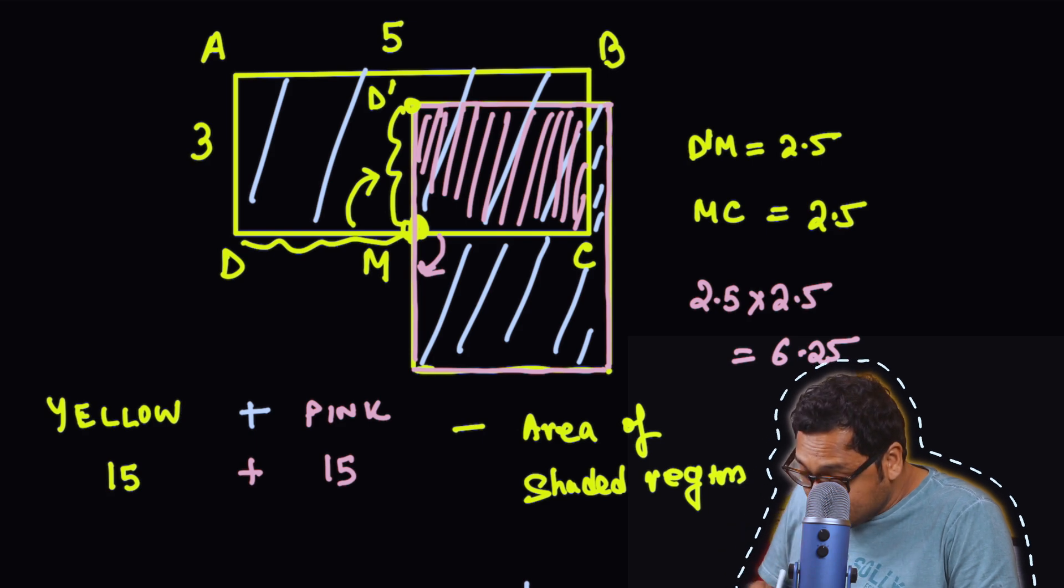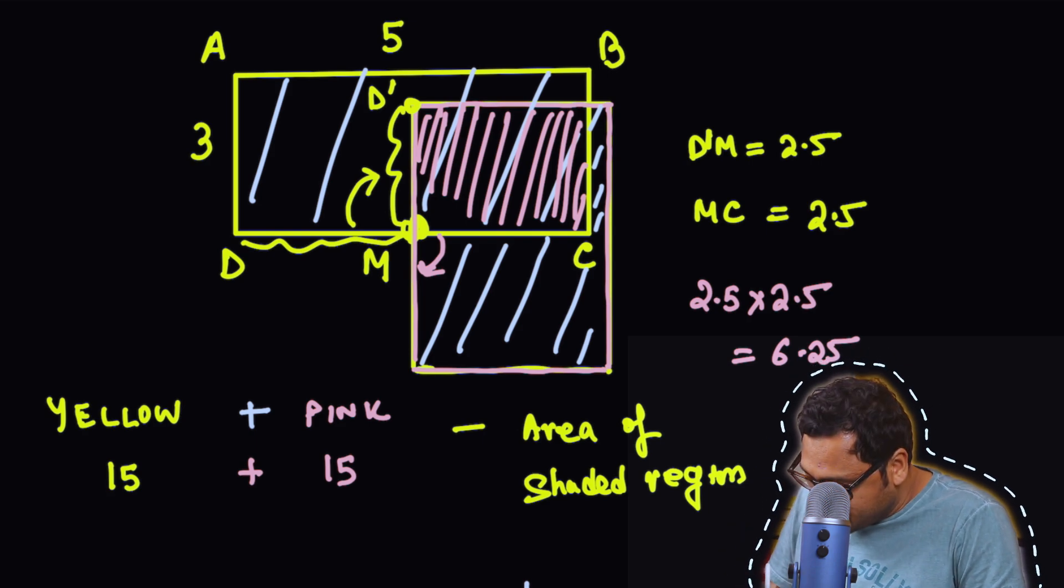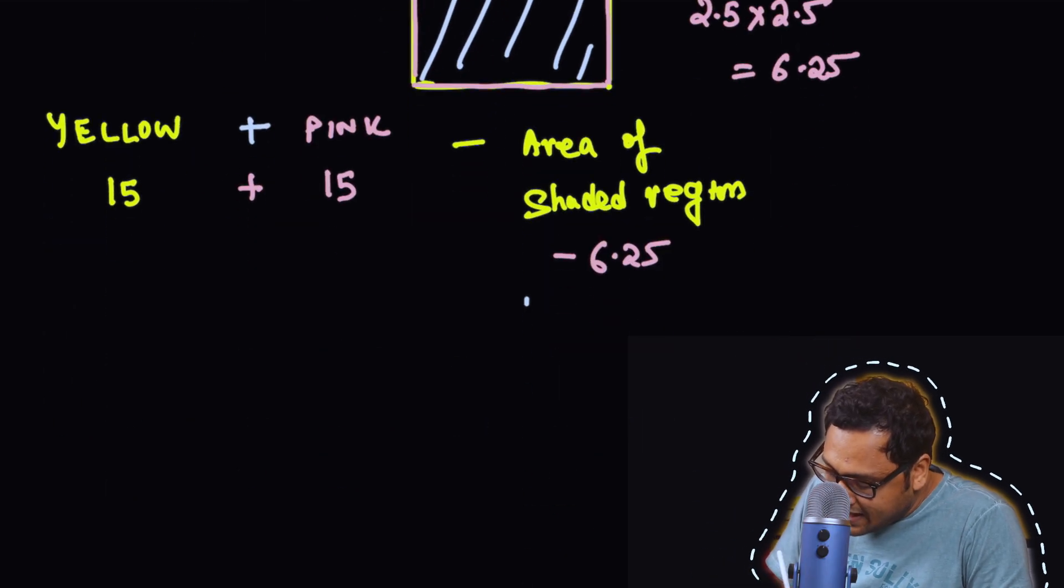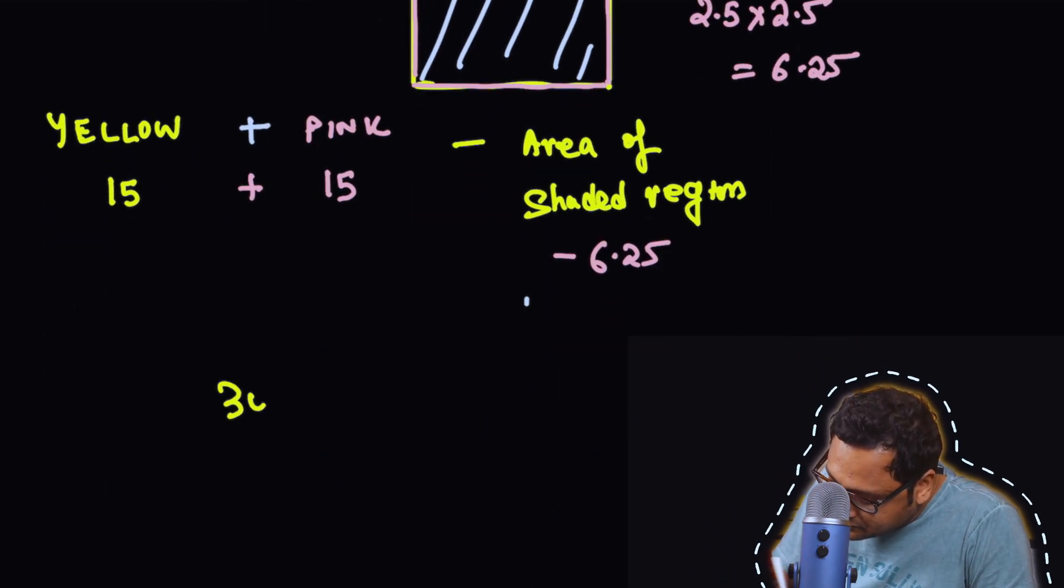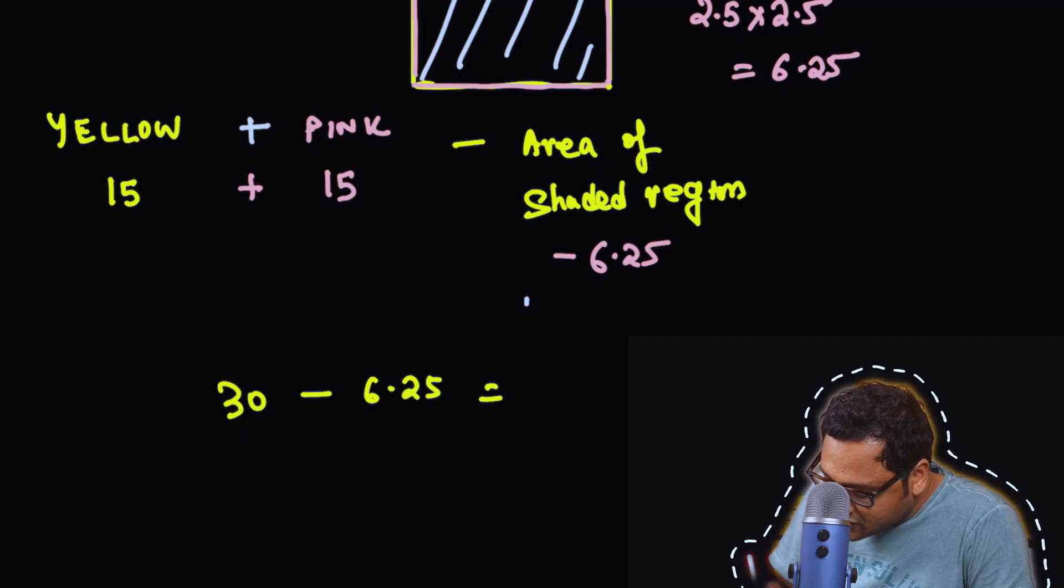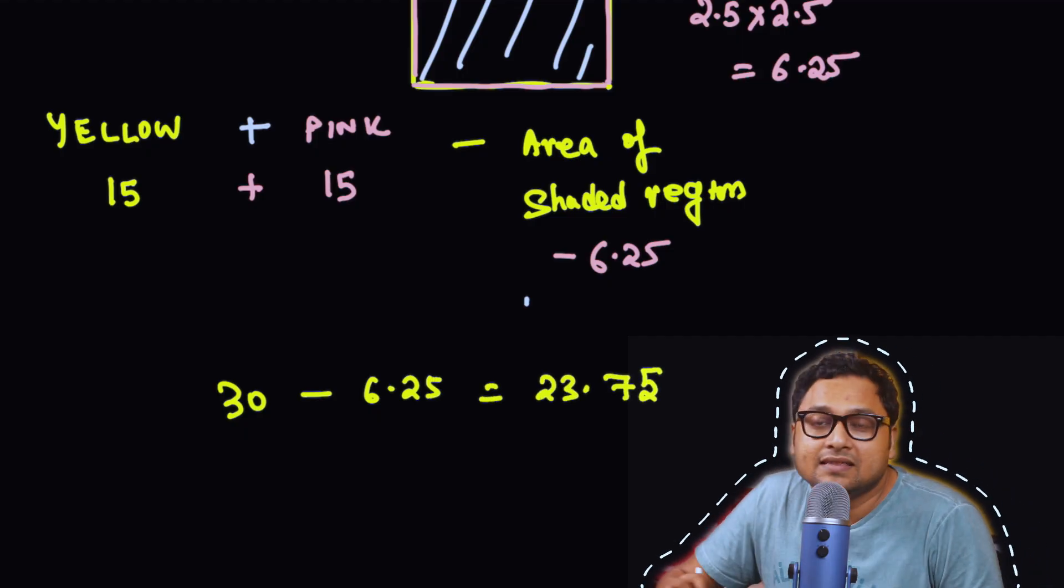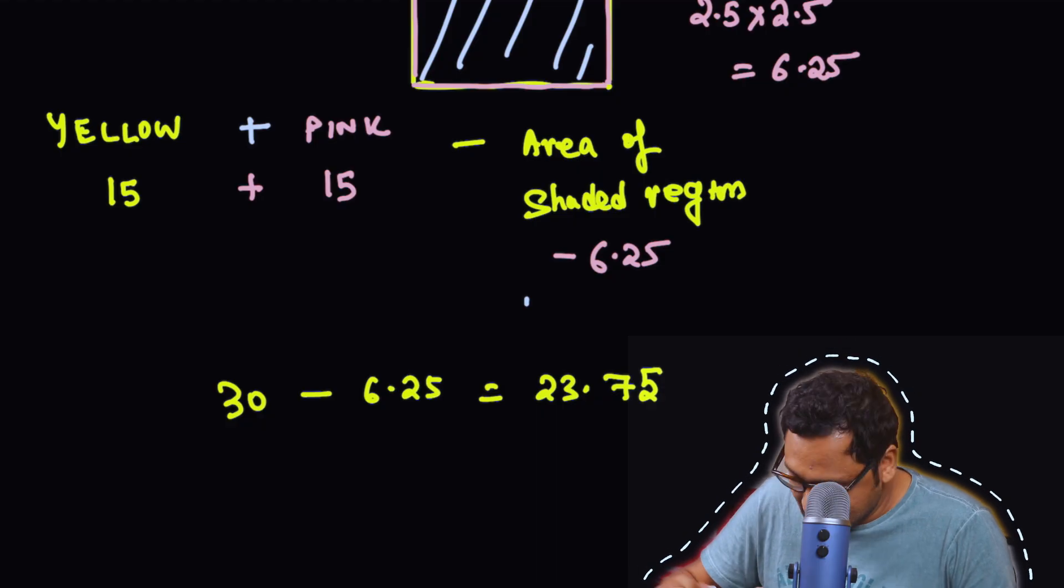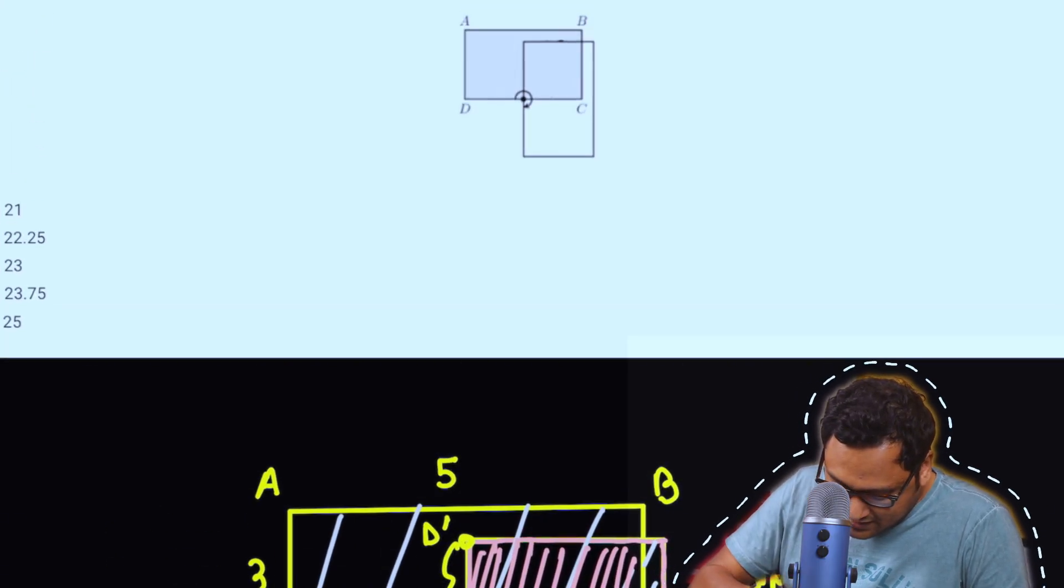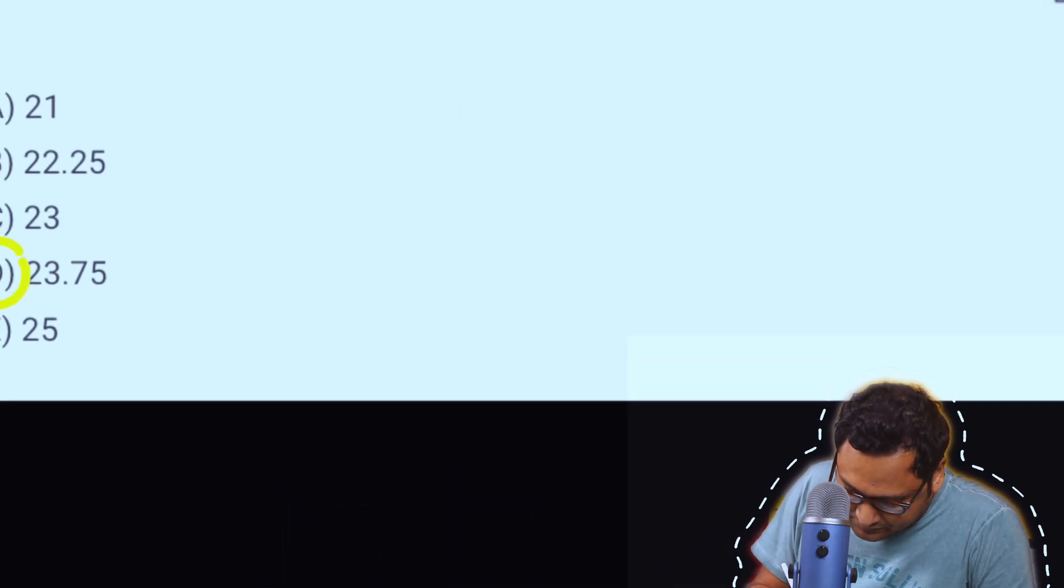So if I wanted to remove the area of the shaded region, I have to subtract 6.25. So I have 30 minus 6.25, which is 23.75. That's the final answer. Let's look at the options. This is option D.